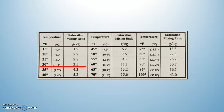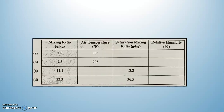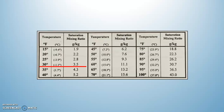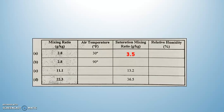Let's take a look at the table. We know the air temperature is 30. I underline 30. What number does it correspond with for the saturation mixing ratio? 3.5. So we take that 3.5 and fill it in. In order to get relative humidity, we take 2.8 divided by 3.5 times 100, which equals 80%.